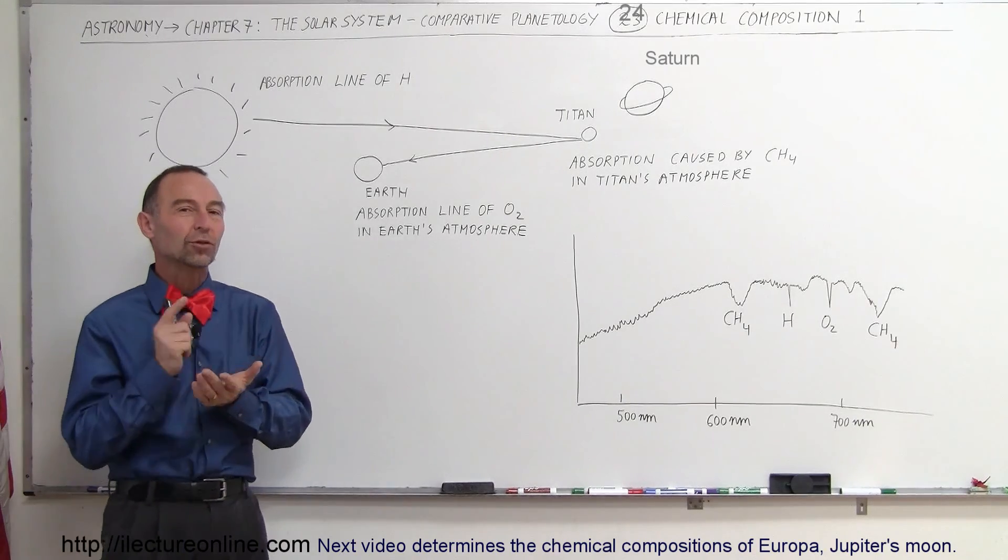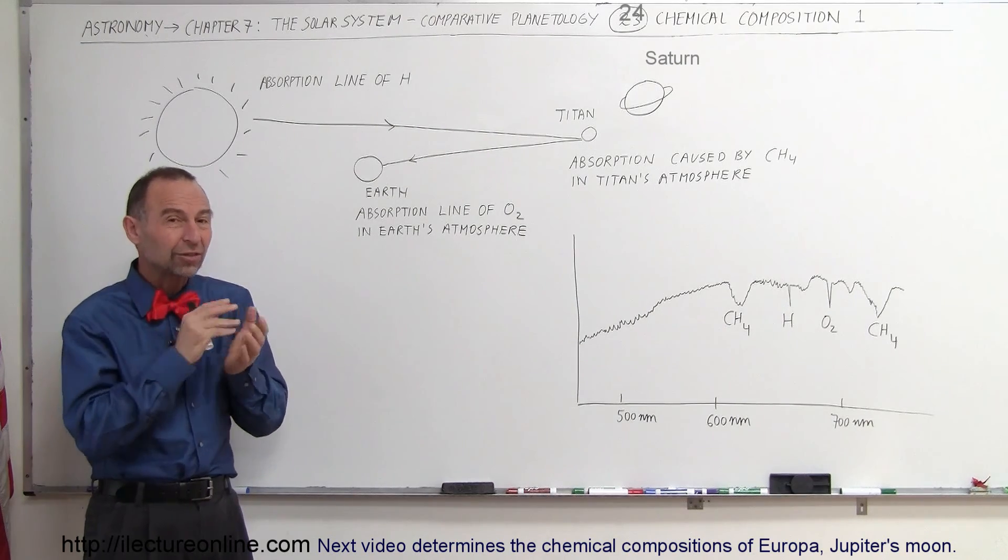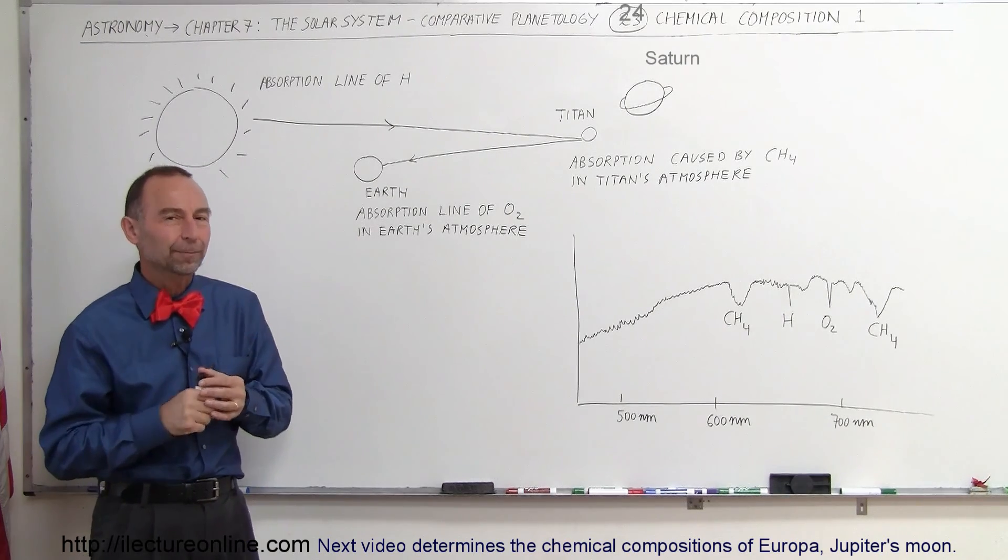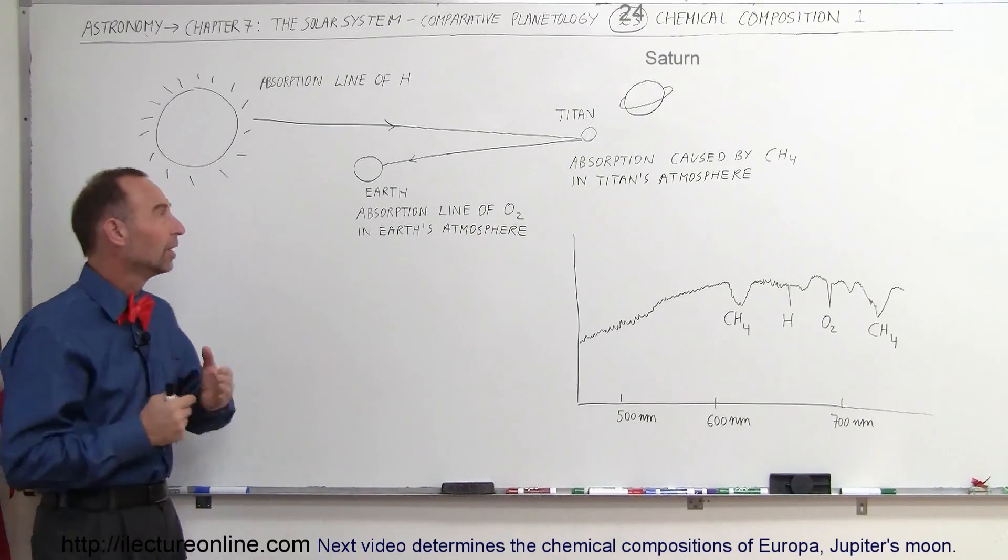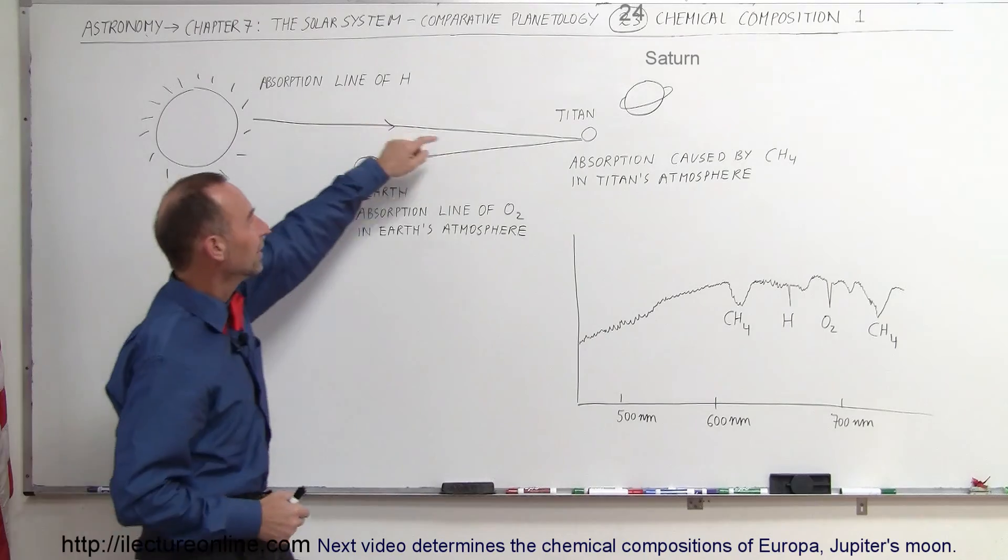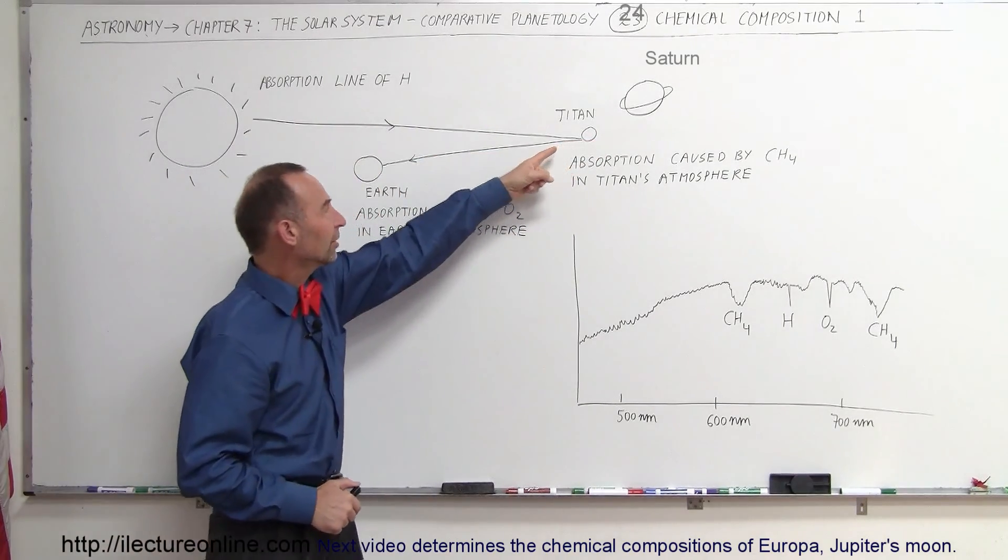Titan is the only moon in the solar system that has an atmosphere, and if you want to figure out what the atmosphere consists of, we can study the spectrum from that atmosphere. Now, the light coming from Titan is reflected from the sun, so the sun shines on Titan, the biggest moon of Saturn, and then the light is reflected.